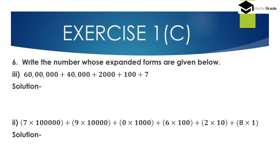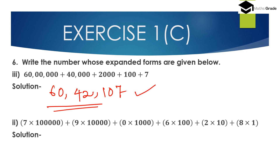Third: 60 lakh + 40,000 + 2,000 + 100 + 7. That is 60 lakh plus 40,000 plus 2,000, which is 42,000, plus 100 plus 7. So 40,000 + 2,000 = 42,000. The number is 60,42,107.